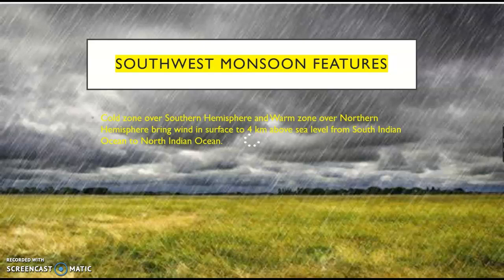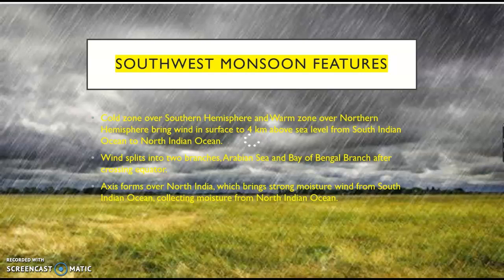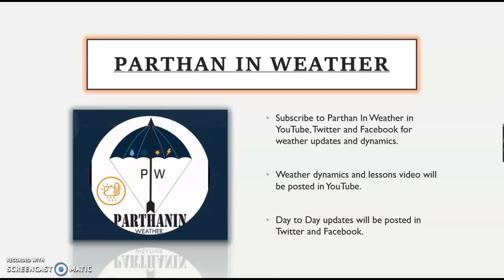Cold zone over the southern hemisphere and warm zone over the northern hemisphere bring wind from the surface to 4 km above sea level from the south Indian Ocean. The south Indian Ocean is cooler than the north Indian Ocean, which drives wind from south to north — this is called the southwest monsoon. After crossing the equator, the wind splits into two branches: one goes through the Arabian Sea, another through the Bay of Bengal. The monsoon axis forms over north India, bringing strong moisture-laden wind from the south Indian Ocean. These are the key crisp points about the southwest monsoon, not an exhaustive study.